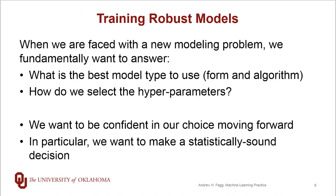Taking a step back, whenever we're faced with a new modeling problem we really want to answer two questions: what's the best form or type of model we should be using for this problem, and how do we select the hyperparameters for a given model type? In making these two choices we want to be confident that the resulting choices will actually give us a quality model in the future, and in particular we want to be able to make a very sound decision from a statistical perspective.